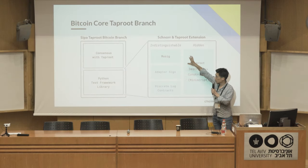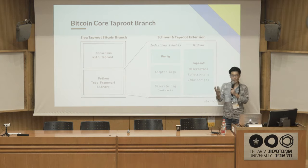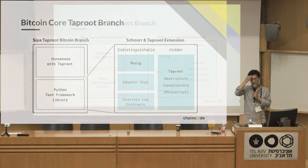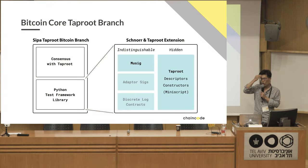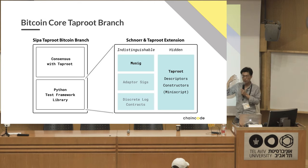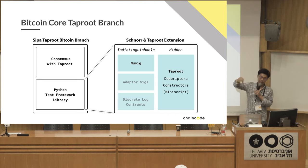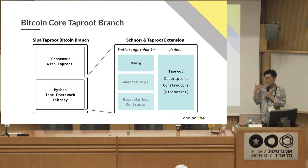We have a couple of Schnorr classes, and the idea is to get developers building cool stuff — unobservable Schnorr contracts — with a very simple Python interface. We have the Taproot side, which is all about building Taproot outputs and constructing these script trees in a convenient and fast manner.